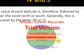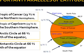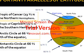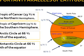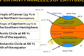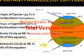The important parallels of latitude include the Equator at 0 degrees. The Tropic of Cancer is to the north at 23 and a half degrees north. The Tropic of Capricorn is to the south in the southern hemisphere at 23 and a half degrees south.